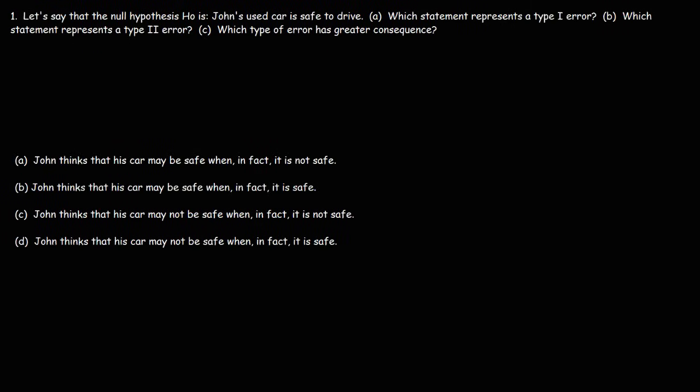Now let's work on some example problems. Number one: let's say that the null hypothesis H0 is the statement 'John's used car is safe to drive.' Part A: which statement represents a type 1 error? And part B: which statement represents a type 2 error?